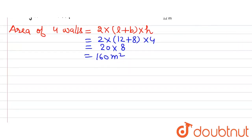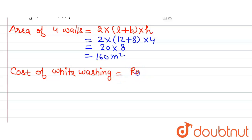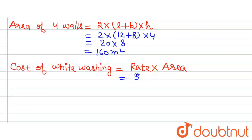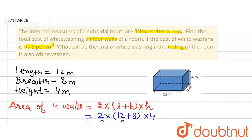Now we find the cost of whitewashing using the formula: cost = rate × area. The rate of whitewashing is rupees 5 per meter square, and the area is 160 meter square. So cost = 5 × 160 = 800 rupees. The cost of whitewashing all 4 walls of the room is 800 rupees.